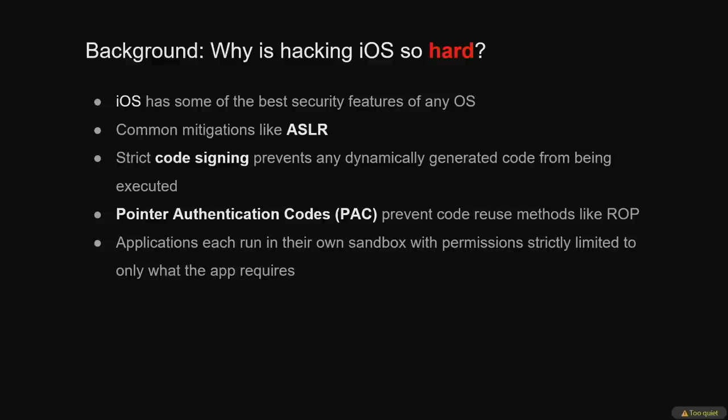iOS hacking is hard — very hard. iOS has common mitigations like ASLR, address space layout randomization, though on iOS it's a little limited, which we'll get to later. More importantly, iOS also has less common mitigations like strict code signing, which prevents any dynamically generated code from being executed. Only code signed with an Apple-approved certificate can run on the device in its normal form of operation.